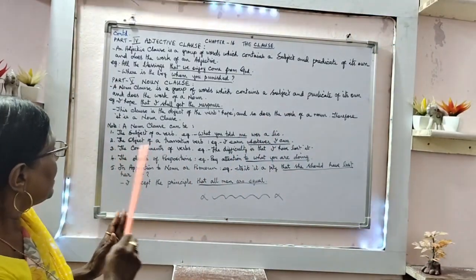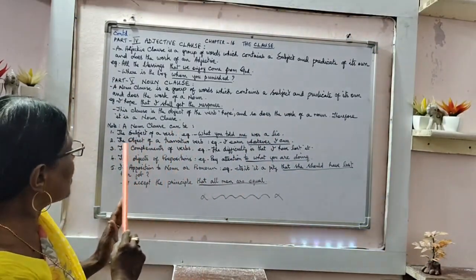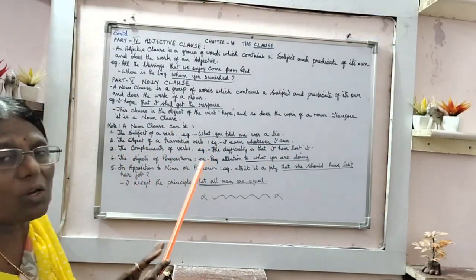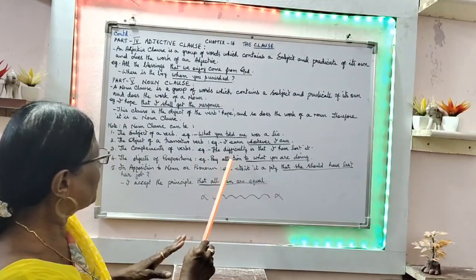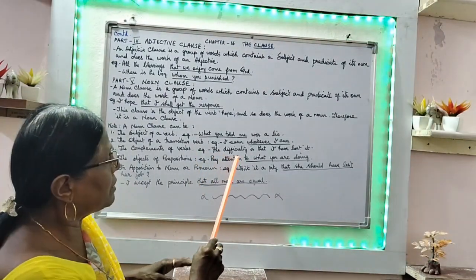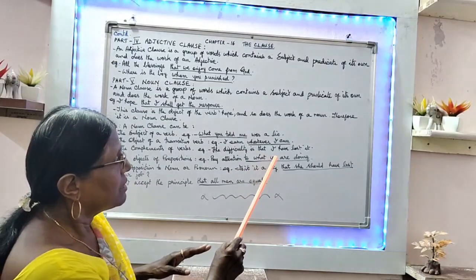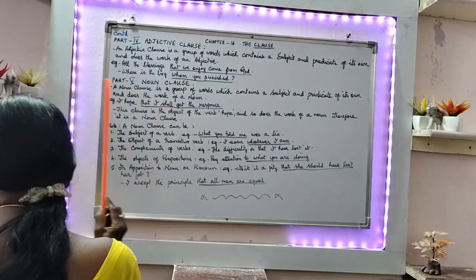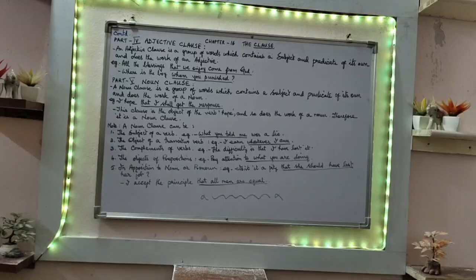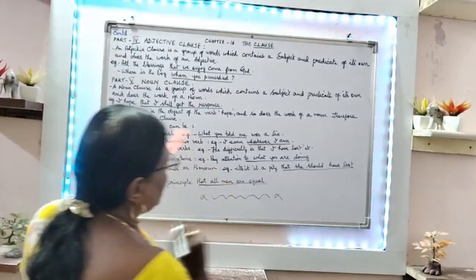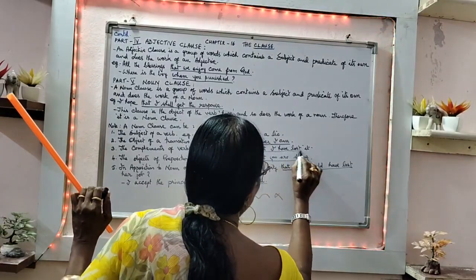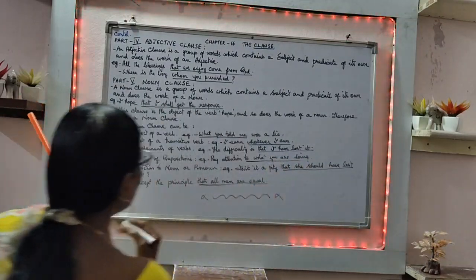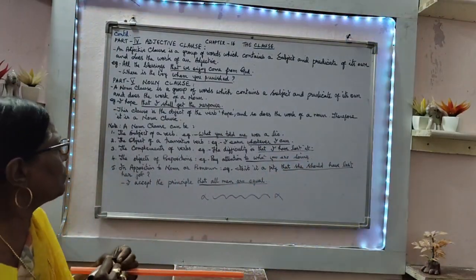The noun clause also comes as the complement of a verb. For that, I have given the example: 'The difficulty is that I have lost it.' Here, 'that I have lost it' is the complement of the verb. So it is the complement of the verb.